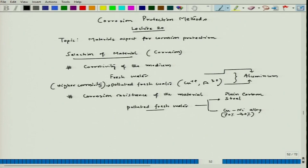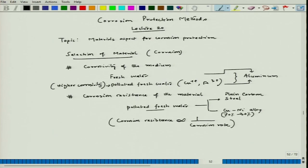Corrosion resistance can be written as the inverse of corrosion rate. So from this equation, higher the corrosion rate, lower is the corrosion resistance. When we define corrosion resistance of a material, we have to fix the corrosivity of the medium. Now the third factor is very important.